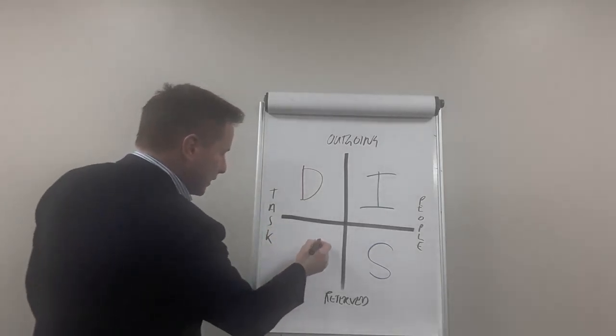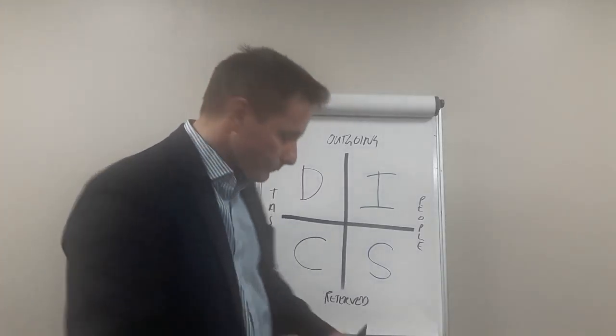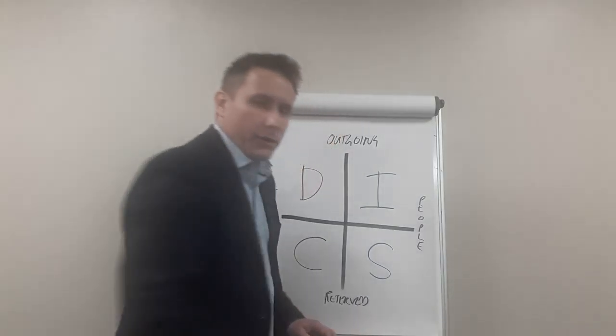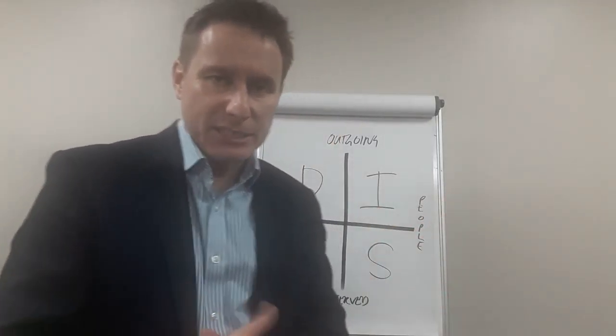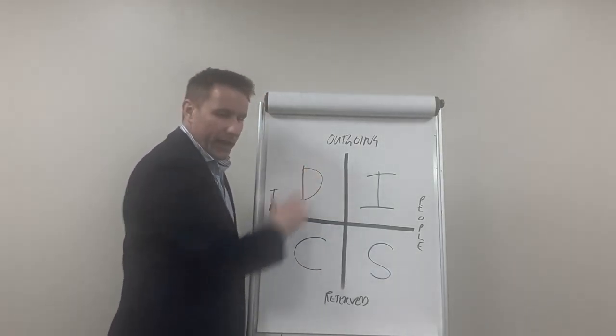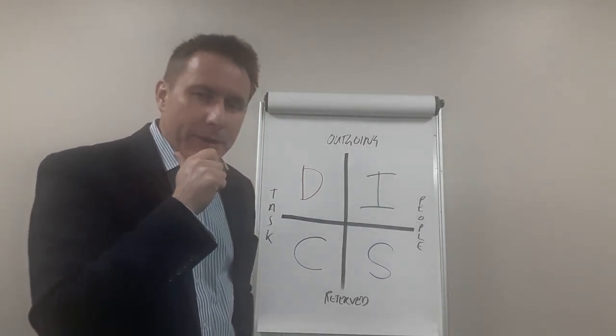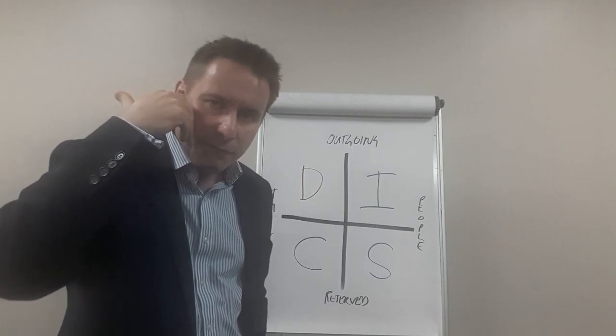Down here, those who are more reserved but still care about the relationship and the person—that was our influence—we then have S, which is our steady people. And then over here, those who are more reserved and more task-focused, we have our Cs or conscientious. So this is called the DISC framework.